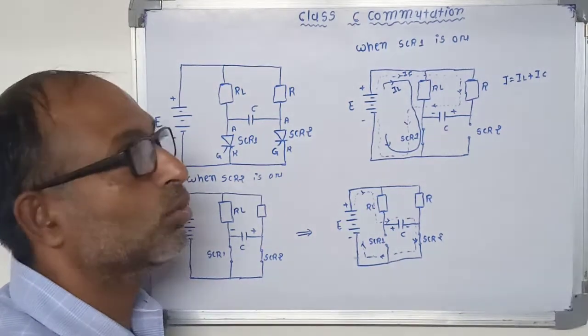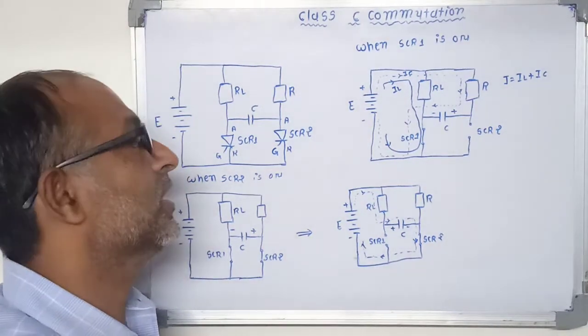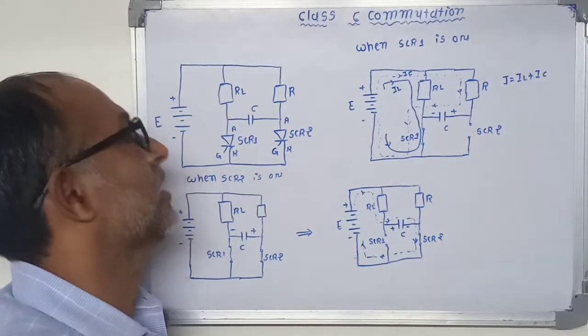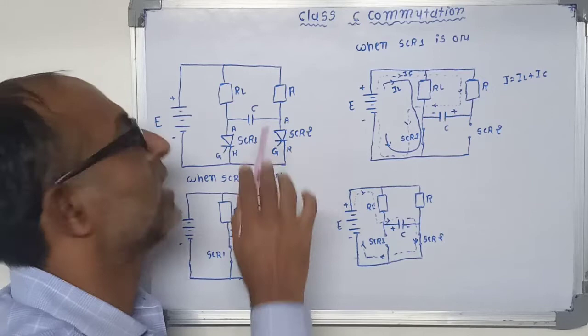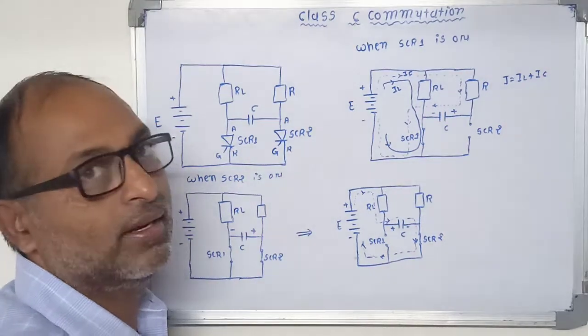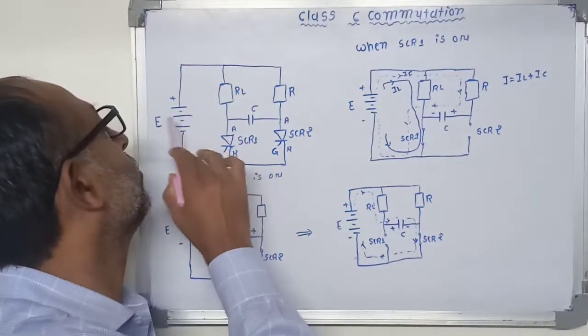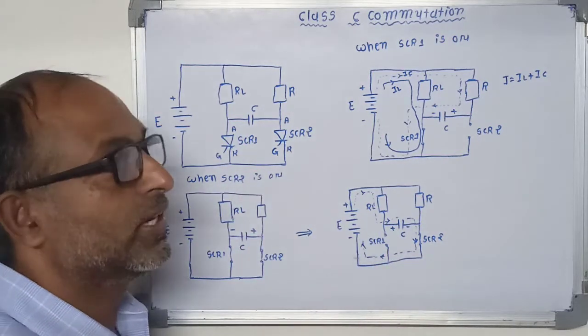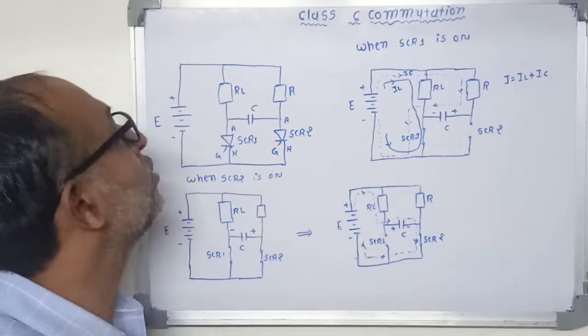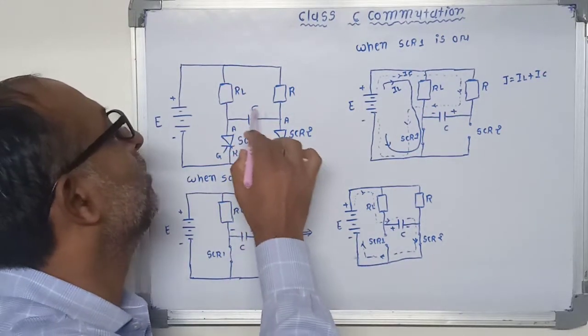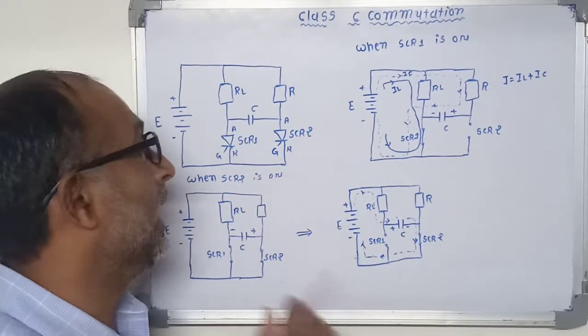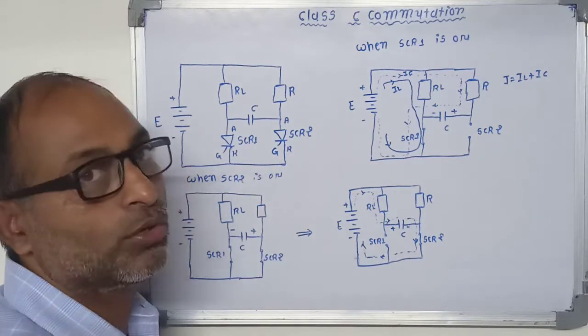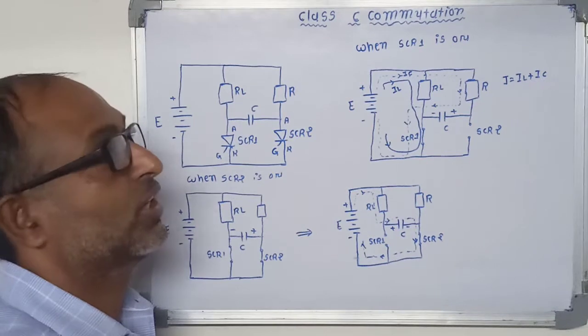Now this SCR2 is the auxiliary thyristor or the SCR which is used to turn off the main thyristor. Now these two combinations are connected in parallel and it is connected across supply voltage E or you can say VS. Now initially we assume that there is no charge available across this capacitor and both thyristors, SCR1 and SCR2, are in off condition.